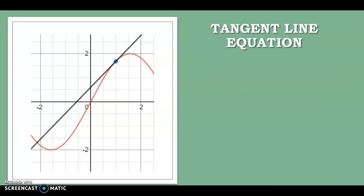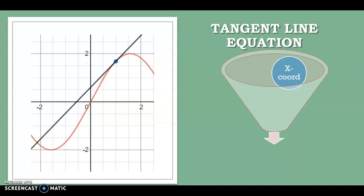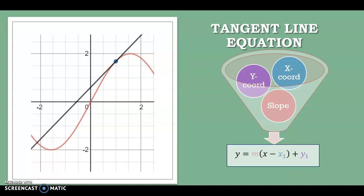Once I have that slope formula, I might want to write the tangent line equation for the tangent line to a curve. To write a tangent line, you need three things: you need an x-coordinate, you need a y-coordinate, and you need a slope. If you have those three things, you can write the equation for a tangent line.